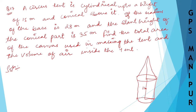If the radius of the base is 28 meters — the same radius for both cylinder and cone — and the slant height of the conical part is 35 meters.